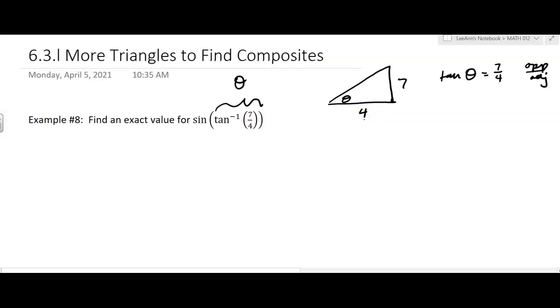And then I can figure out, because of the Pythagorean Theorem, I can figure out what the hypotenuse is. So 4 squared plus 7 squared is going to equal, I'll just call it C squared. So C for the hypotenuse. And that's 16 plus 49.